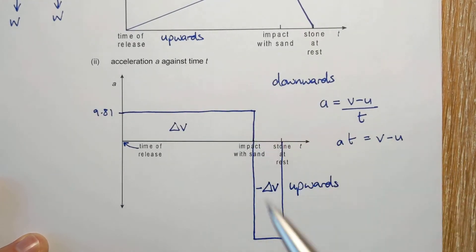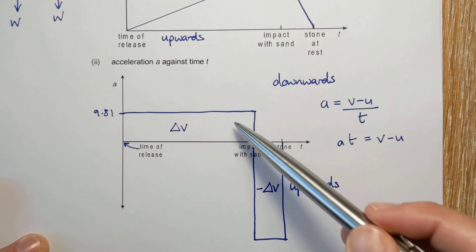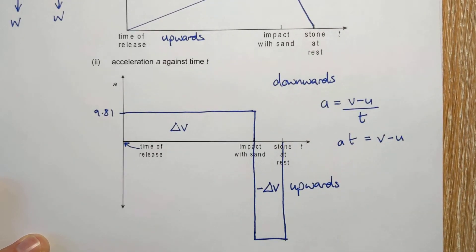So whatever velocity it gains falling, it then needs to lose in order to stop. And so actually, if you've been really clever, the area of these two shapes is the same. But you didn't need that for the full marks.